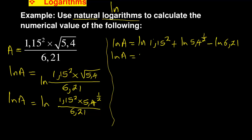You can simplify now to say - remember if it's a power you drop it down. This particular power here will drop down before ln, as well as half will also drop down before ln. That's the laws of logarithms. So it will be 2 ln 1.15 plus 1 over 2 ln 5.4 minus ln 6.21. Then you can simplify and say ln A equals...